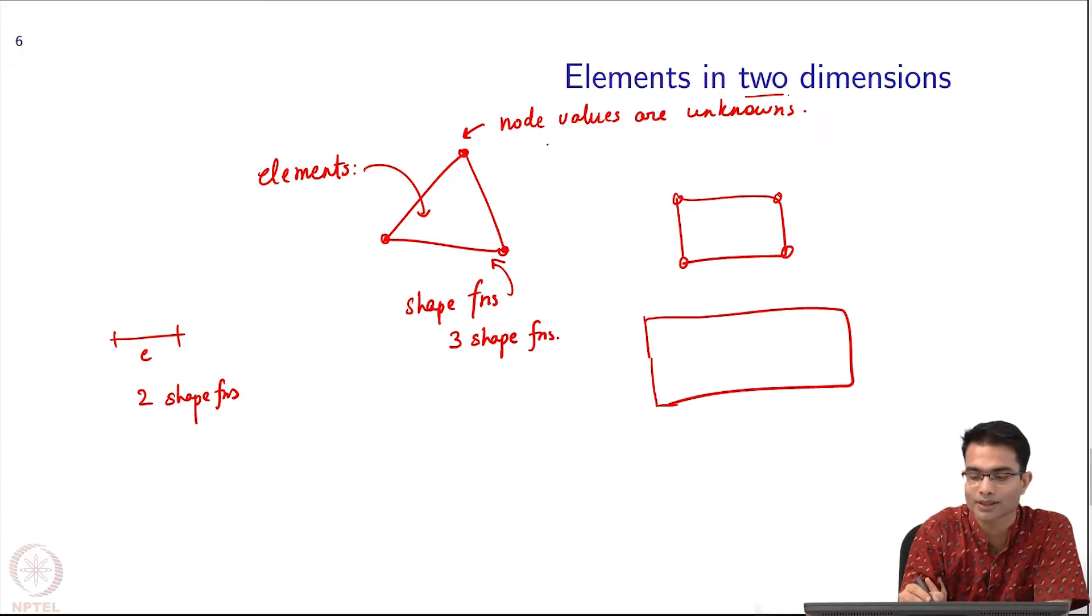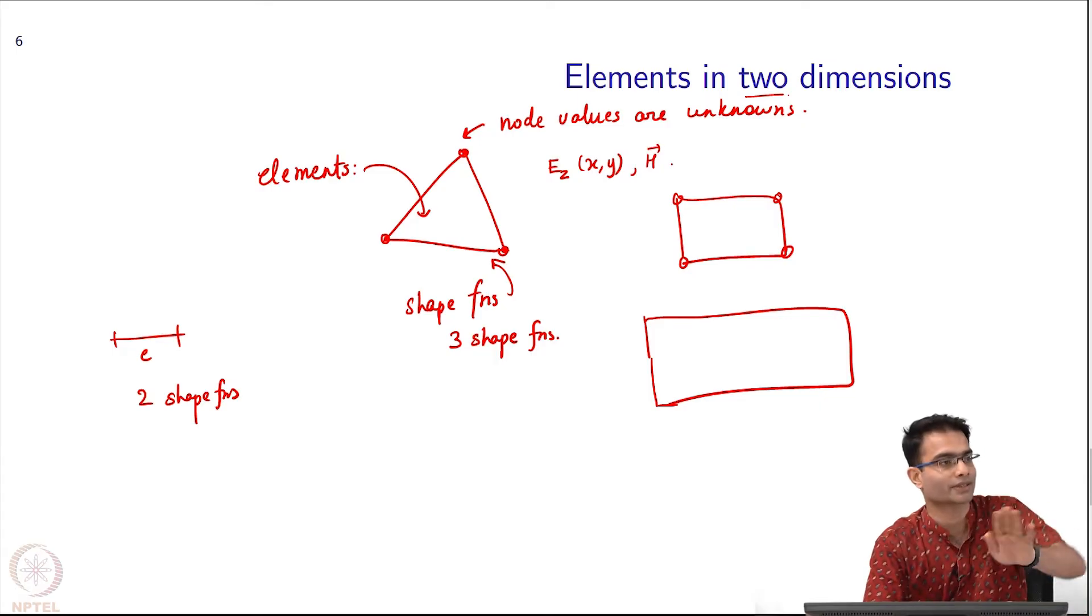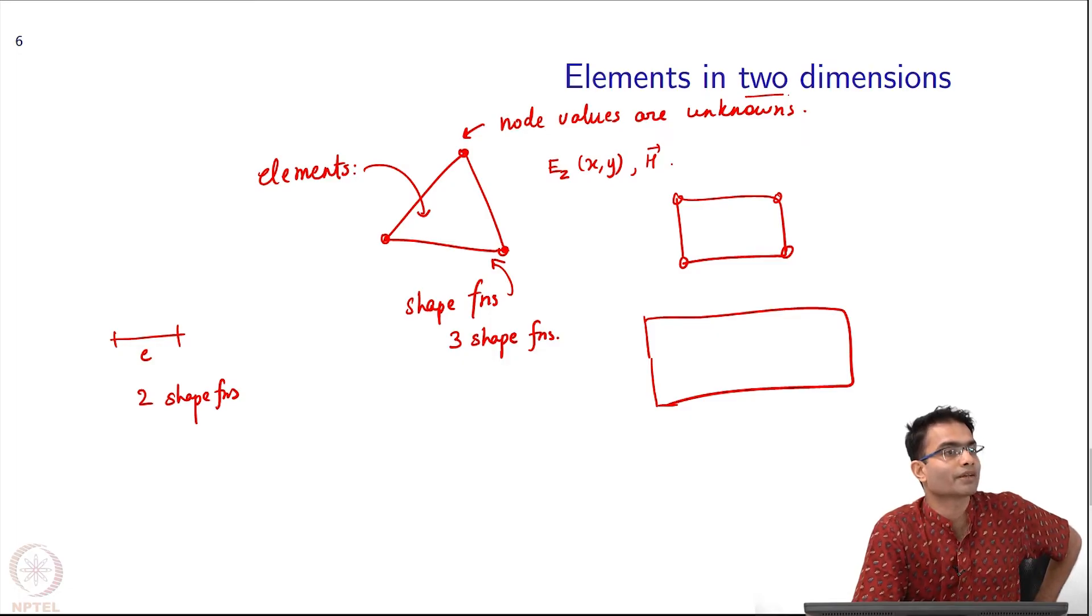If I had something like E_z, E_z is a function of x,y - there is a value of E_z, it is itself a scalar. But what if I wanted to represent a true vector field? For example, in TM polarization H is a vector in plane. Supposing I wanted to represent the H vector in plane, will the nodes be useful for me? A node is not going to help me - how do I get direction out of it? It gives me a value but it does not give me direction.